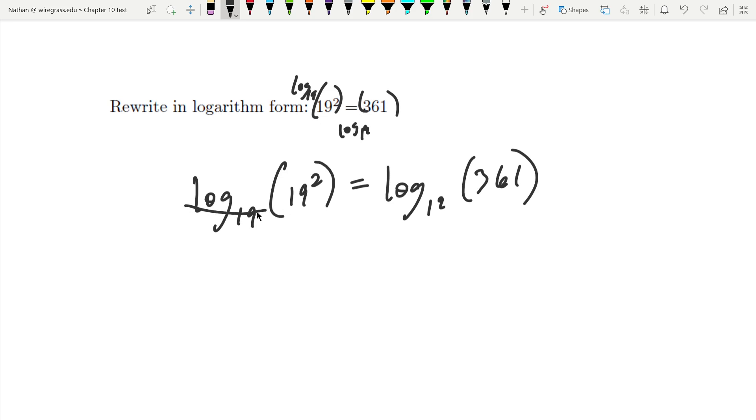The log base 19 and 19 are going to cancel, and we're going to be left with just the power, 2. So 2 equals log base 19, 361.